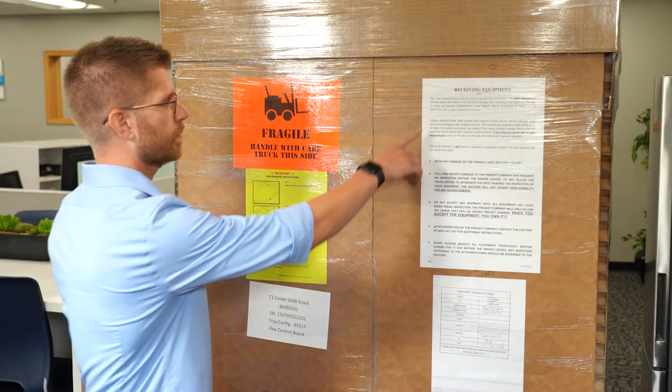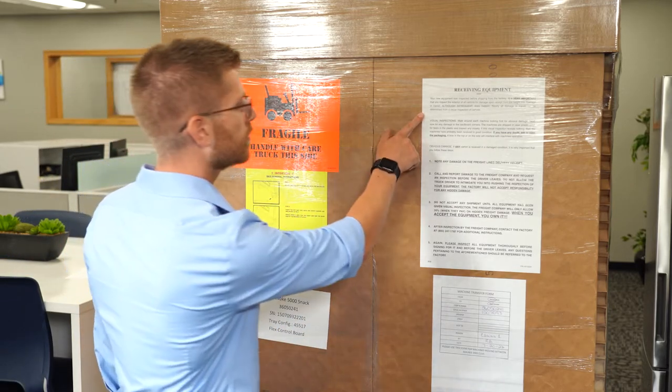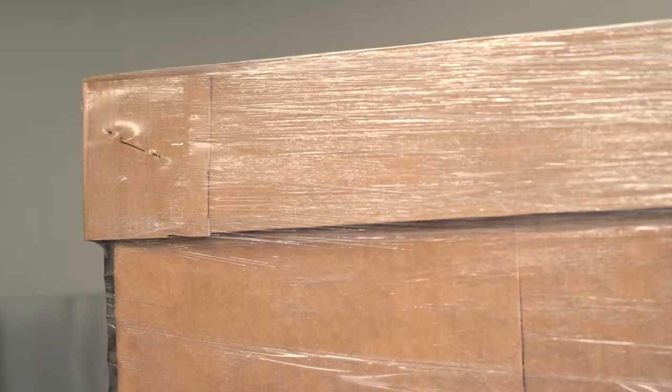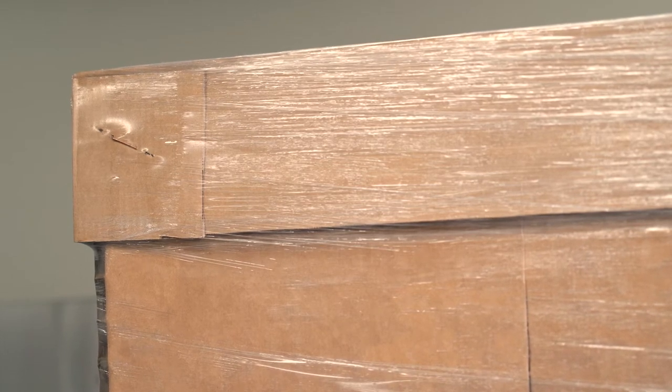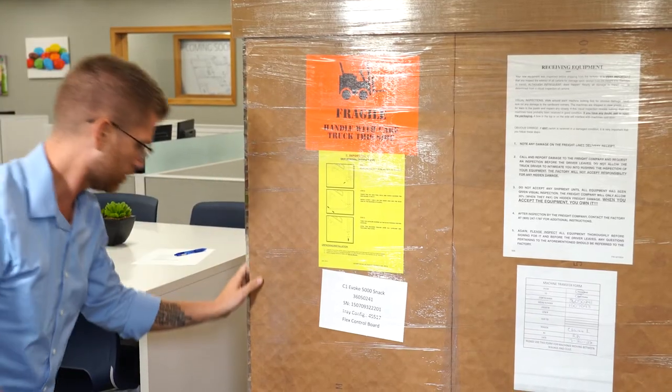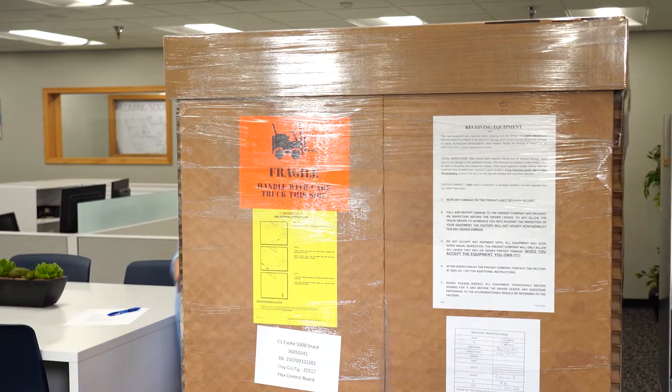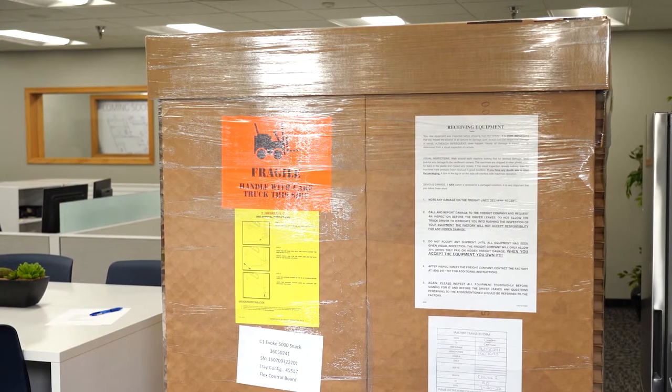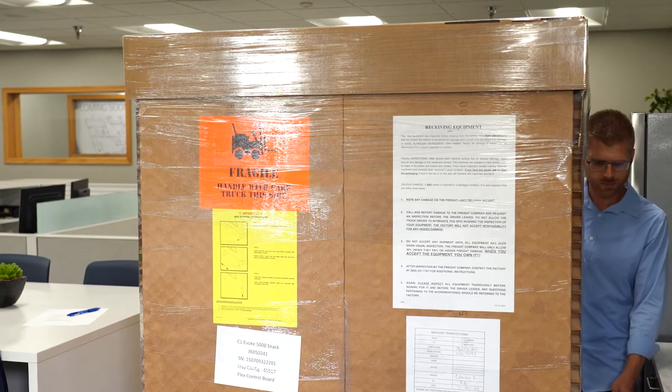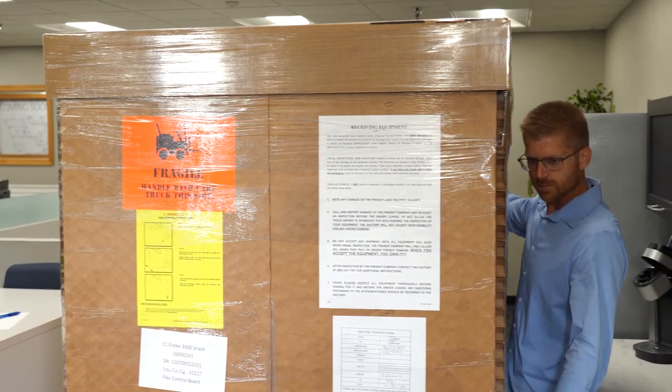Nearly all damage in transit can be determined from a visual inspection of cartons. Look for any damage to the cardboard corners. The machines are shipped in clear plastic. Look for tears in the plastic and inspect them closely. Take photos of any external damage to packaging before removing it. If this visual inspection reveals nothing, then the machine has probably been received in good condition.